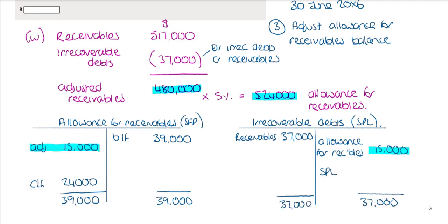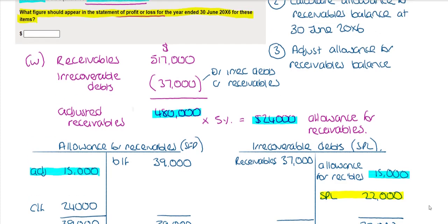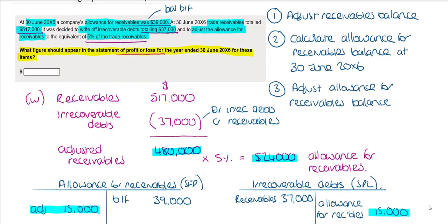The balancing figure in the irrecoverable debts account is what we transfer to the statement of profit and loss. Therefore my transfer is $22,000. Reviewing the question — what figure should appear in the statement of profit and loss for the year ended 30th of June 20x6? It should be $22,000.